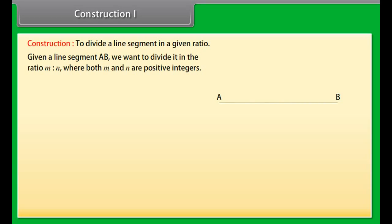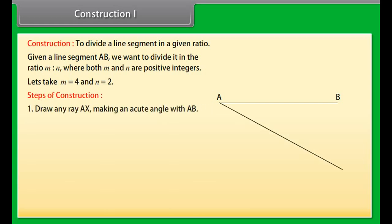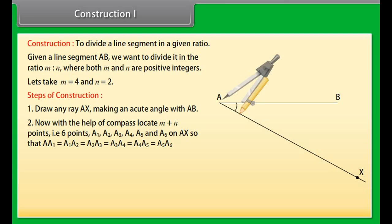Construction. To divide a line segment in a given ratio. Given a line segment AB, we want to divide it in the ratio M is to N where both M and N are positive integers. Let's take M as 4 and N as 2. Steps of Construction: Draw any ray AX, making an acute angle with AB. Now with the help of compass, locate M plus N points, that is 6 points,